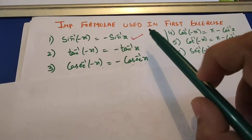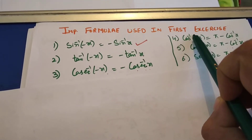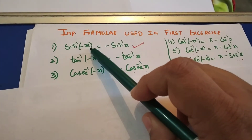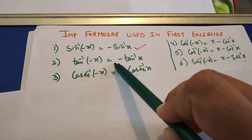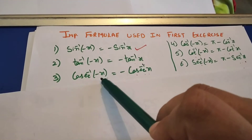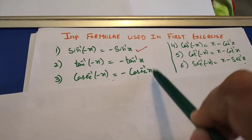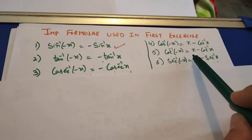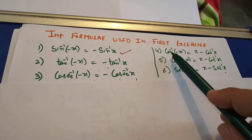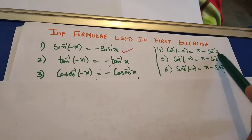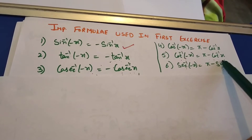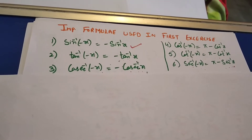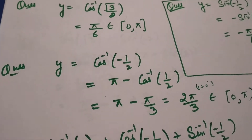Before going to the questions, here are some important formulas you need to remember; only then will the first exercise questions be solved. sin⁻¹(−x) = −sin⁻¹(x), tan⁻¹(−x) = −tan⁻¹(x), cosec⁻¹(−x) = −cosec⁻¹(x) — these three take the minus sign outside. The other three absorb the minus and add π: cos⁻¹(−x) = π − cos⁻¹(x), cot⁻¹(−x) = π − cot⁻¹(x), sec⁻¹(−x) = π − sec⁻¹(x). Please learn these formulas by heart.